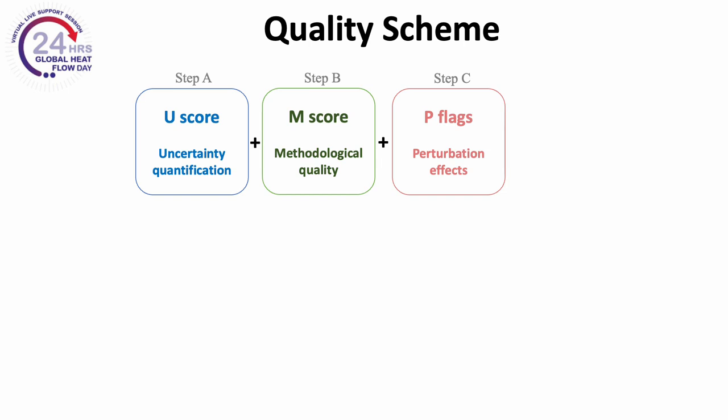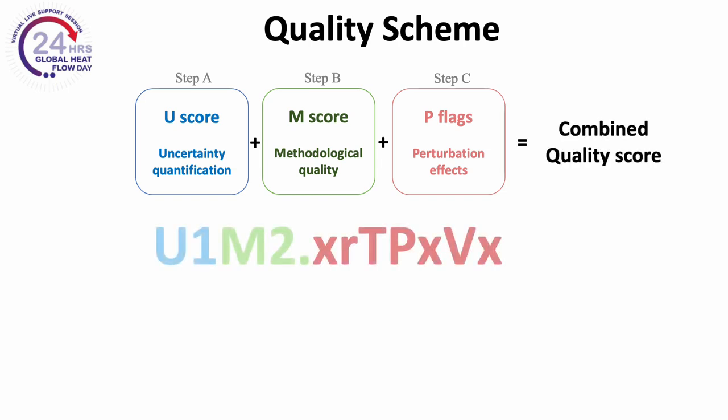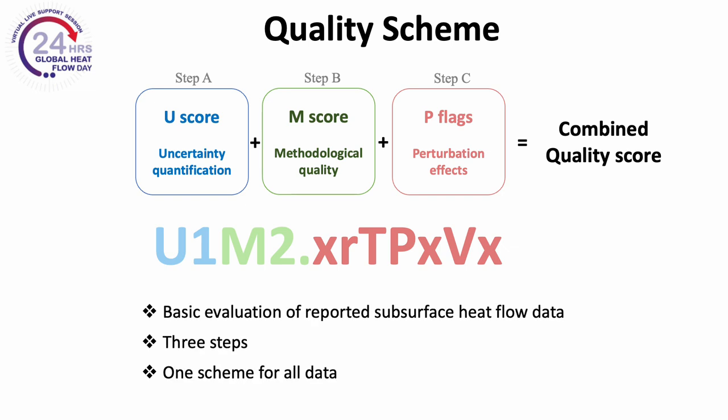When you put all three steps together, a combined quality score is produced, which provides a lot of information in a very compact format. This quality scheme and the scores provide a basic evaluation for initial understanding of the data in the heat flow database to facilitate its use for heat flow-related research and applications.